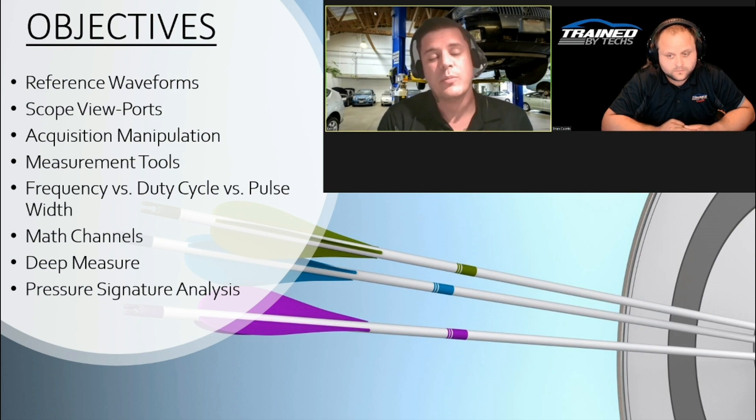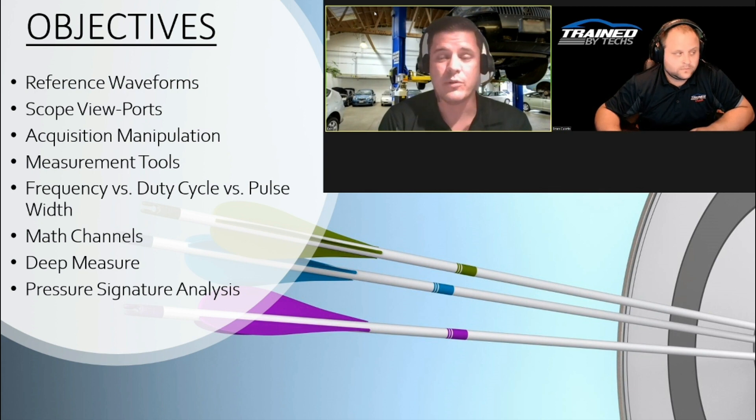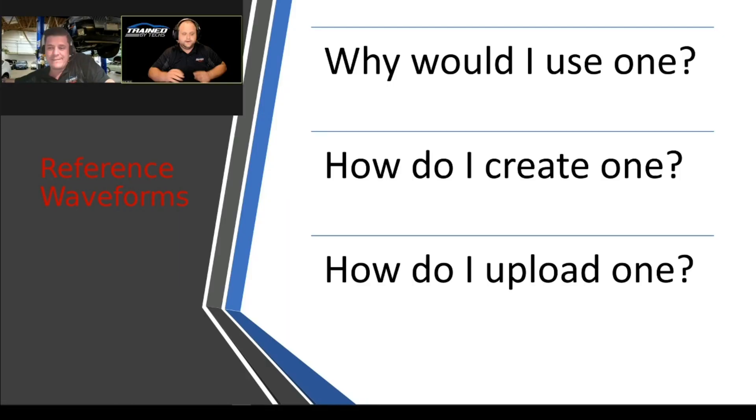We wanted to cover some of the bullet points of what we wanted to make sure everybody took away from this class. The first one on our list is reference waveforms. The big question there at the top is a good one: why would you use one? When you're lab scoping a vehicle, often you'll find yourself struggling to determine if what you're looking at is a broken car or maybe something that you're not familiar with. So the easiest way would be to compare to a known good.